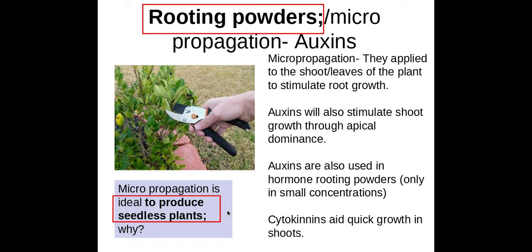Auxins are also used to produce seedless plants. Seedless plants need to be produced using rooting powders because if they don't have any seeds they can't reproduce, so the only way they can reproduce is through using rooting powders such as auxins.